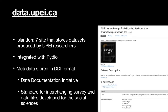So I want to give the story of data.upei.ca. That is an Islandora 7 site that stores data sets produced by UPEI researchers — University of Prince Edward Island. It's integrated with Pidio, which is a kind of self-hosted file sharing system, kind of like a self-hosted Dropbox. Unfortunately, it's a little bit abandoned at this point and more or less going away. So when we decided to upgrade our data repository to Drupal 8 and Islandora 8, we were going to move away from it.